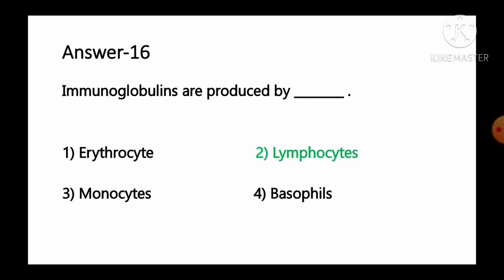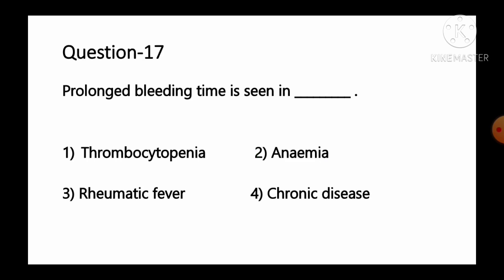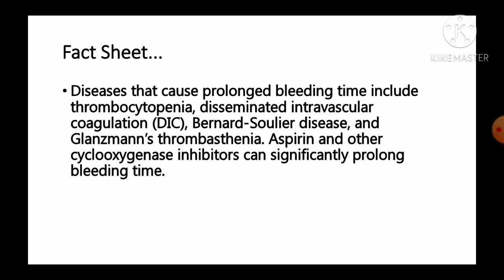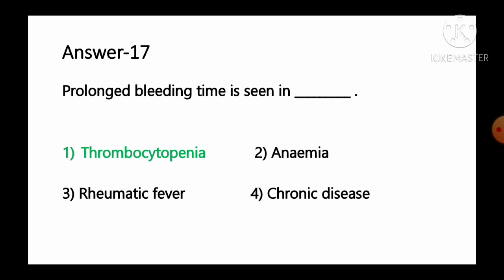Question number 17: Prolonged bleeding time is seen in — option 1 thrombocytopenia, option 2 anemia, option 3 rheumatic fever, option 4 chronic disease. Diseases that cause prolonged bleeding time include thrombocytopenia, disseminated intravascular coagulation (DIC), Bernard-Soulier disease, and Glanzmann's thrombasthenia. Aspirin and other cyclooxygenase inhibitors can also significantly prolong bleeding time. So option number 1, thrombocytopenia, is the correct answer.